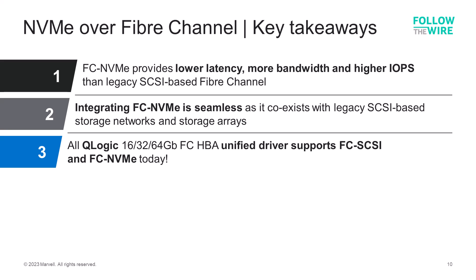Here are the key takeaways as to why customers using fiber channel SCSI should consider transitioning to NVMe over fiber channel. First, due to the efficiency of the protocol and the fact that it's optimized for NVMe device communication, FC-NVMe delivers lower latency, more bandwidth, and higher IOPS than SCSI-based solutions. Second, the transition to FC-NVMe is seamless for existing fiber channel customers — FC-NVMe coexists with legacy SCSI using the same SAN infrastructure, allowing concurrent NVMe and SCSI I/O. And last but not least, QLogic fiber channel HBAs make that transition as easy as possible with a unified driver already in use today — no change required to host firmware or driver when adding native NVMe storage to your SAN.